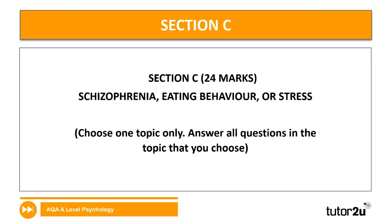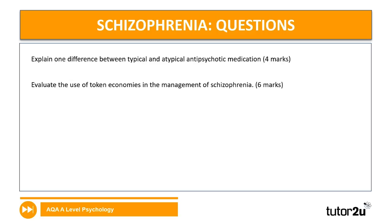We're moving to Section C, which includes schizophrenia, eating behaviour, and stress. You will just be answering one section — whichever you've been taught. Starting with schizophrenia: we have a four-marker and a six-marker. Explain one difference between typical and atypical antipsychotic medication, and evaluate the use of token economies in the management of schizophrenia — ten marks altogether, approximately 12 to 13 minutes. Pause the video and attempt both questions.